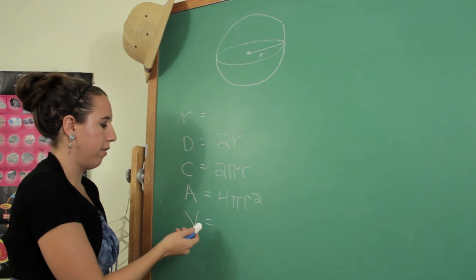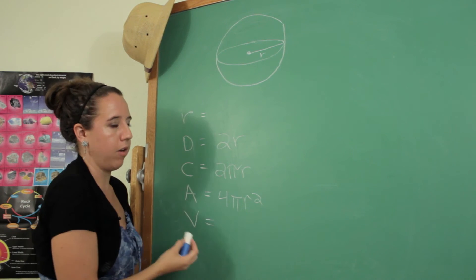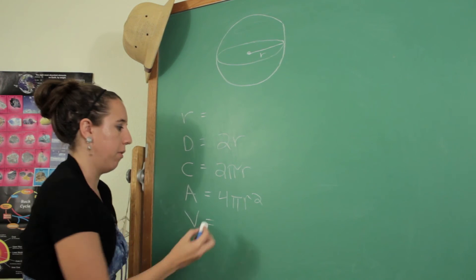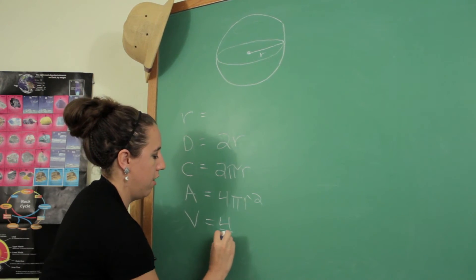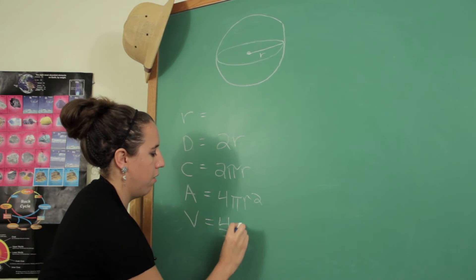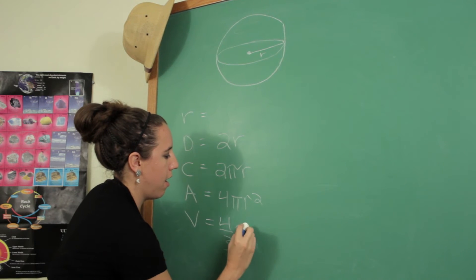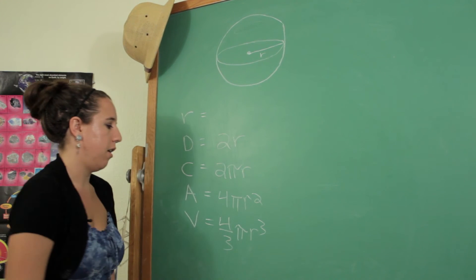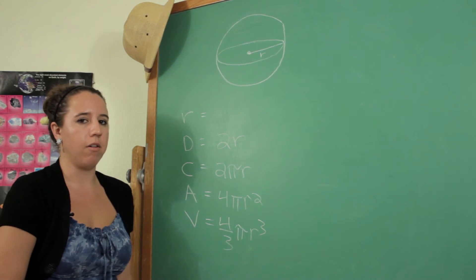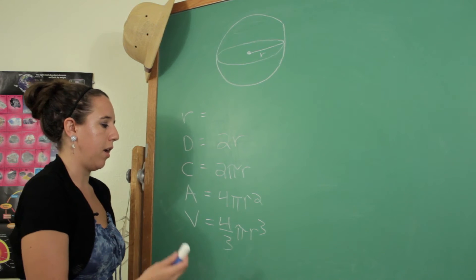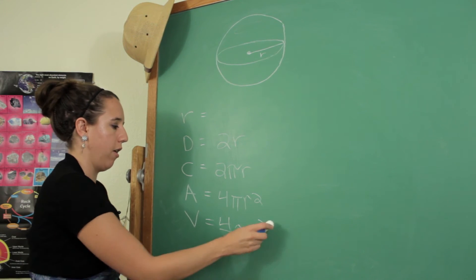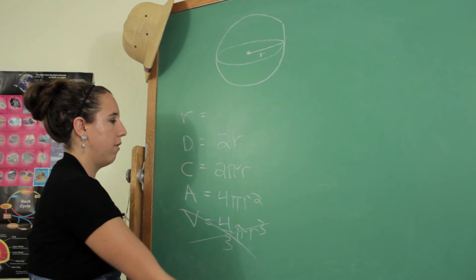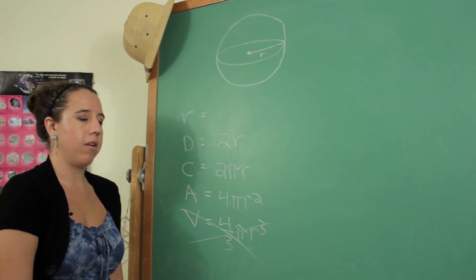Lastly your volume, which we're not supposed to know, but just for fun: four thirds pi r cubed. Since we're told we do not have the volume, we'll get rid of that one.